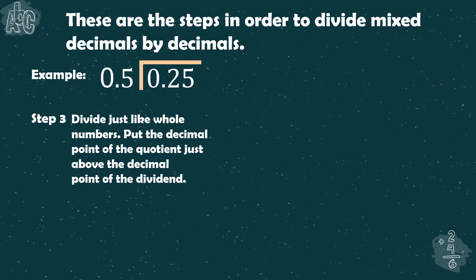Step number 3 is to divide just like whole numbers. Put the decimal point of the quotient just above the decimal point in the dividend. To not forget to write the decimal point before you solve the division, put the decimal point above the decimal point in the dividend first.